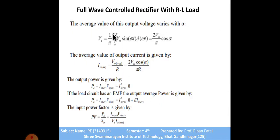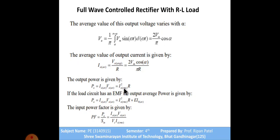When beta equals pi plus alpha, the average output voltage simplifies to V_zero_average = 2Vm/π × cos α. The average current is I_zero_average = V_zero_average / R. The output power P = I_zero_rms² × R. These are the power and current equations for the bridge rectifier with RL load.